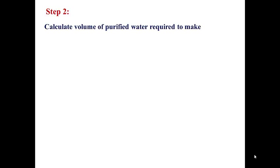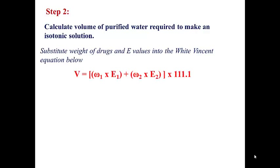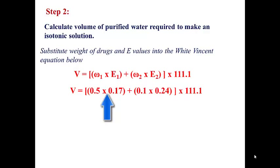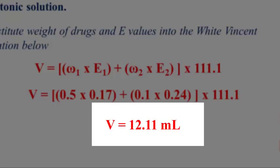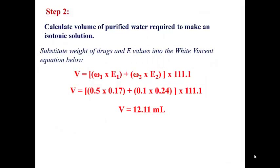Substituting into the generalized White-Vincent equation: V equals (0.5 times 0.17), which represents the weight and E value of homatropine hydrobromide, plus (0.1 times 0.24), which represents the weight and E value of chlorobutanol, all multiplied by 111.1. This gives a volume of 12.11 milliliters of purified water needed to make the solution isotonic.